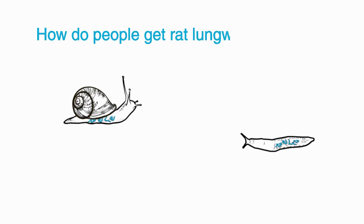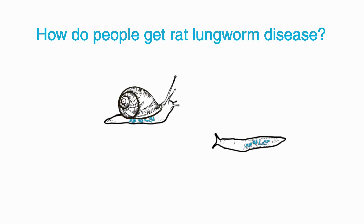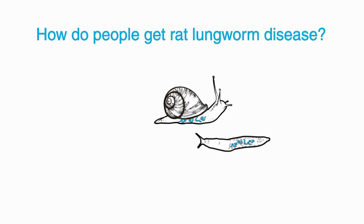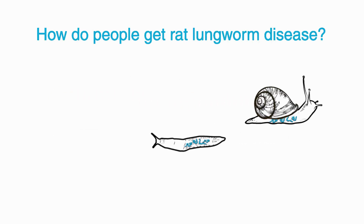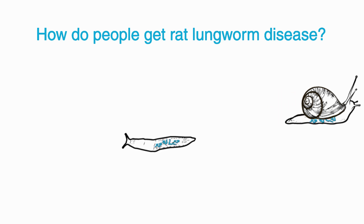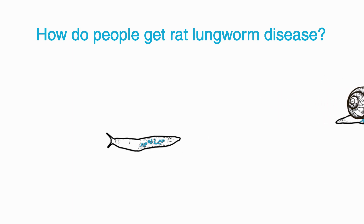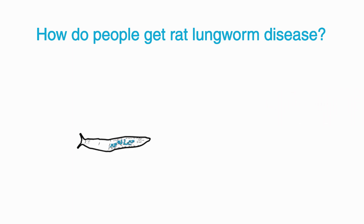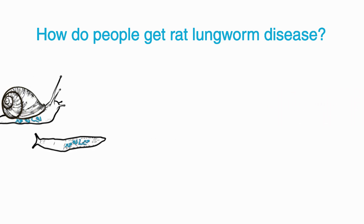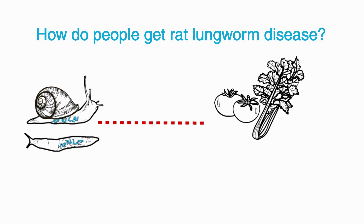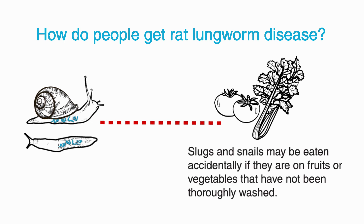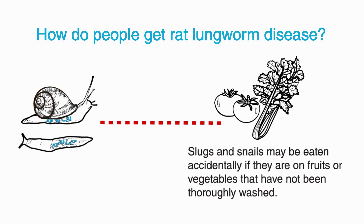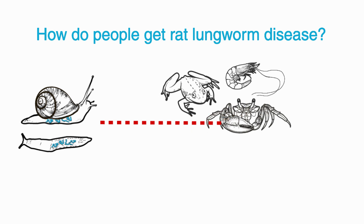So how do people get it? People get rat lungworm disease when they eat raw or undercooked slugs or snails that have worms in them. Slugs and snails may be eaten accidentally if they're on fruits or vegetables that haven't been thoroughly washed.